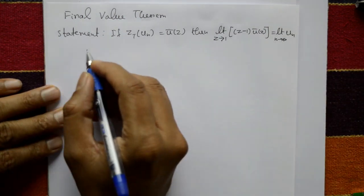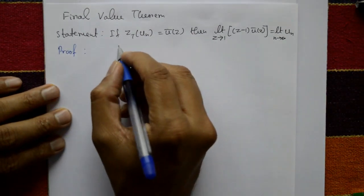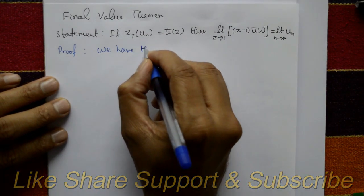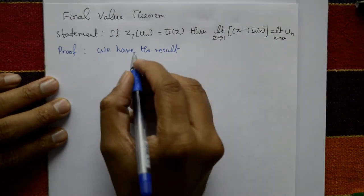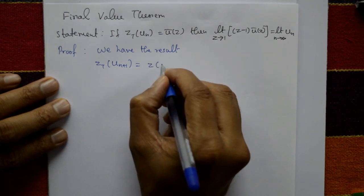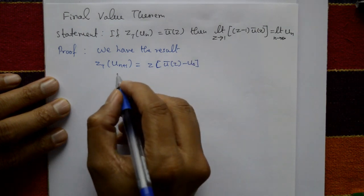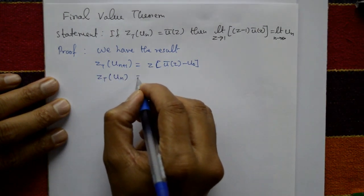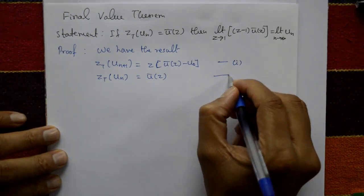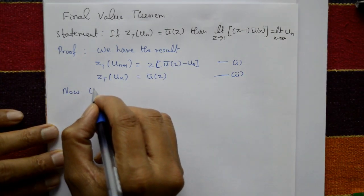For the proof, we use the result that the Z-transform of u[n+1] is equal to z times ū(z) minus u₀. This is equation one. And the Z-transform of u[n] is equal to ū(z) by definition. This is equation two.